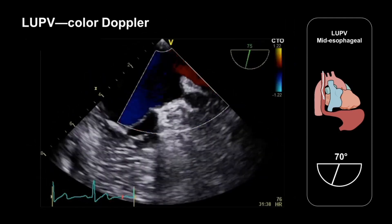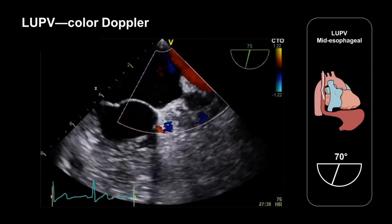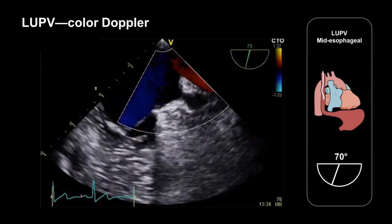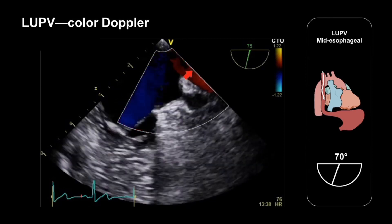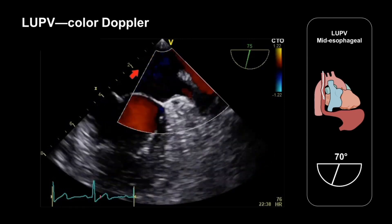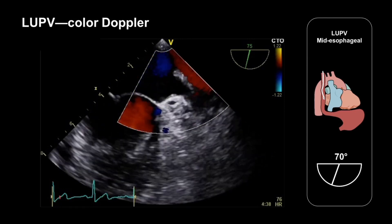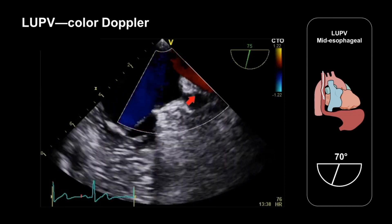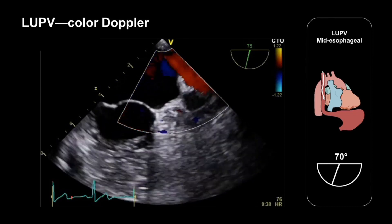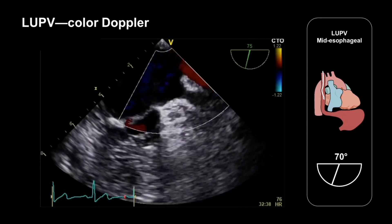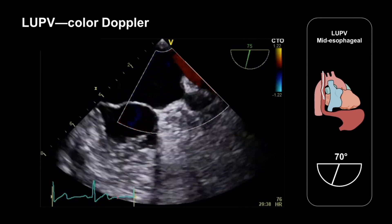The pulmonary veins are often easier to see when we switch on colour Doppler. We can see the flow in the pulmonary vein entering the left atrium. I'd suggest switching on colour Doppler from the outset when hunting for each of the four pulmonary veins, because it does make it somewhat easier to locate them.